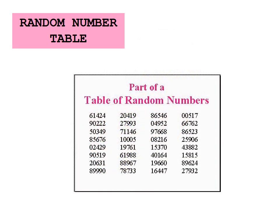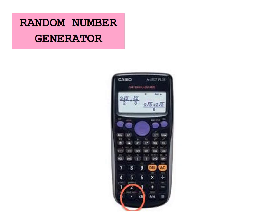You could also use a random number table, where each member of your target population is allocated a number, and using your finger you randomly point to choose participants that way. You can also use the random number generator on your calculators.